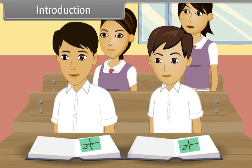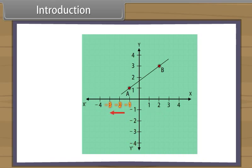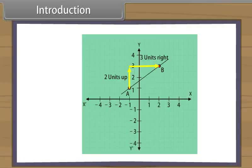What are these movements? We can see that the up movement is positive while a down movement is negative. In the same manner, a right movement is positive while a left movement is negative. Notice that to go from point A to point B, we went two units upward and then three units to the right. The slope of a line, represented by letter M, is expressed as up or down movement divided by the right or left movement.